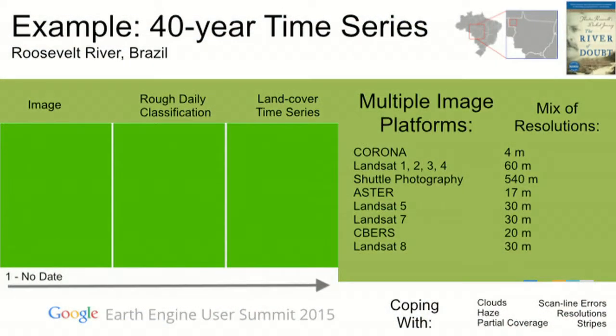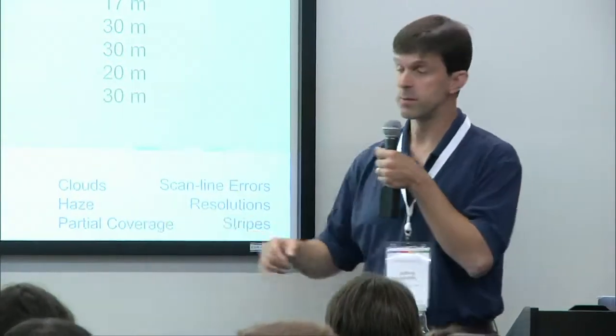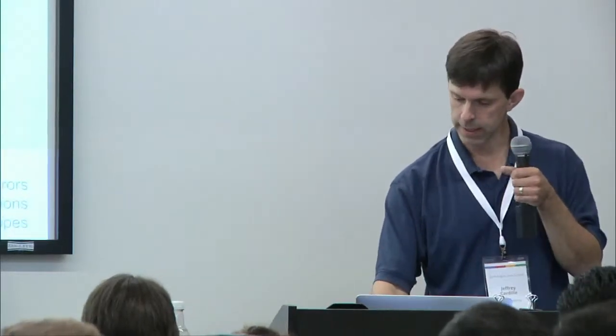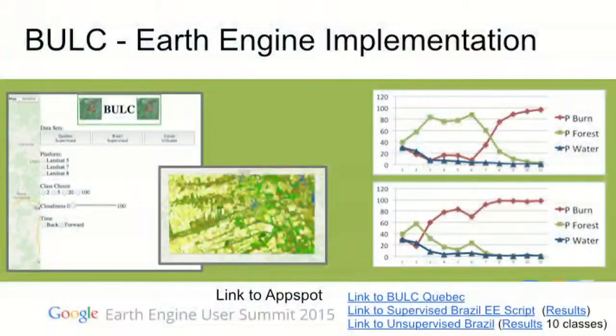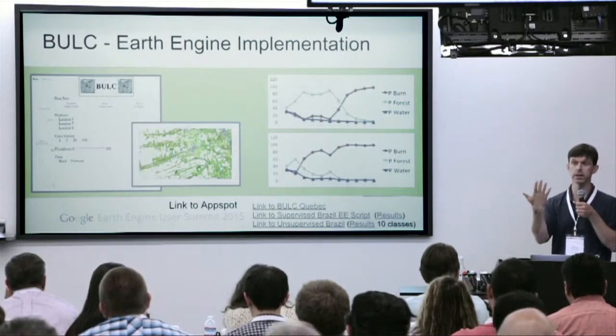Overall we're coping with clouds — not trying to find cloud-free images but instead trying to drown out the clouds with enough imagery. There are lots of images with partial coverage and data of all different resolutions. The basic algorithm is now running in Earth Engine within the playground. Our goal now is to produce an AppSpot interface so that any user interested in tracing land cover through time can come to this site, load in a land cover classification with the categories they want, and then roll it forward or backward in time.